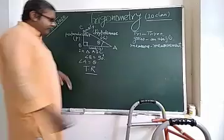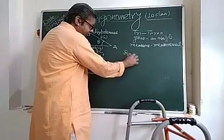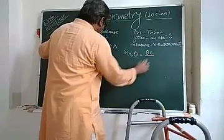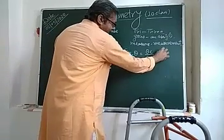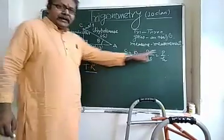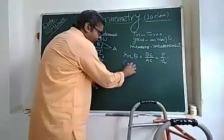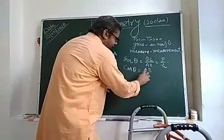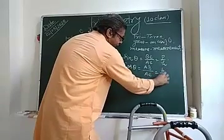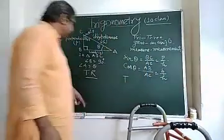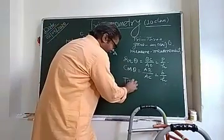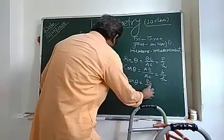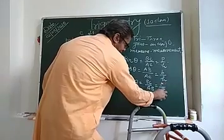First of all, for value of sine, sine of this acute angle theta, that gives the value of BC, opposite side, to the hypotenuse AC, and that is equal to P by H. Now, cos theta, cos theta, base by hypotenuse, that gives the value of AB by AC, and that is equal to B by H. After then, for this angle, value of tan, tan theta, and tan theta, that will be equal to BC by AB, that is the perpendicular by base.